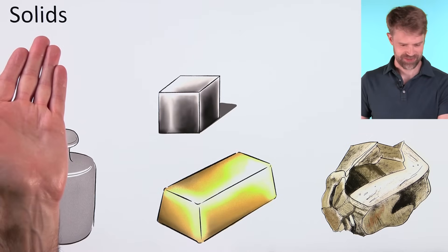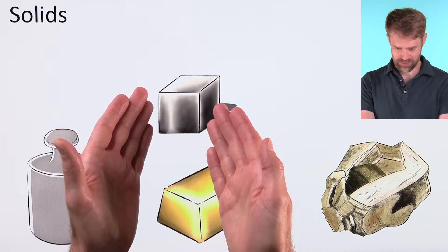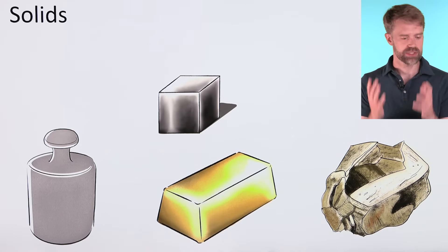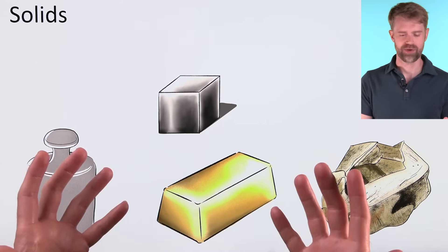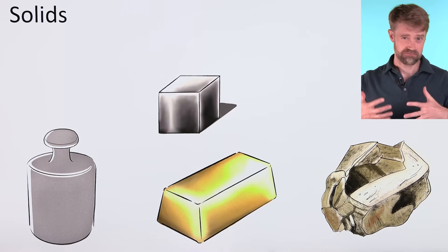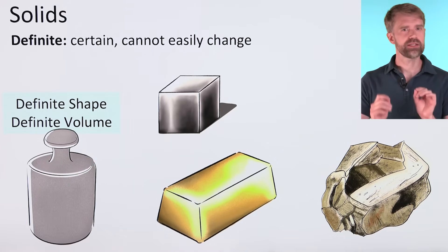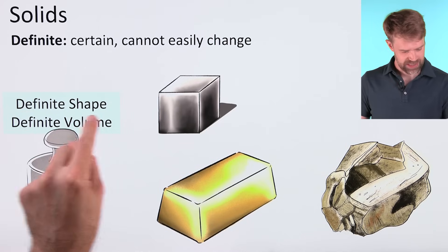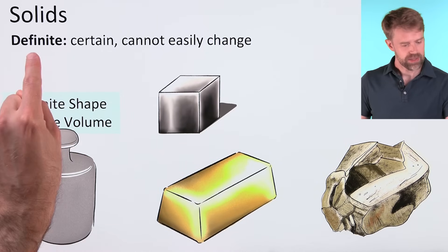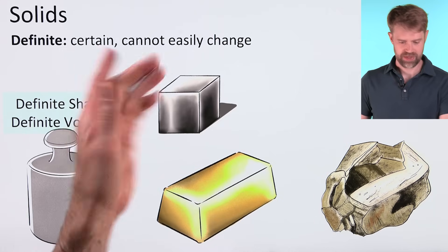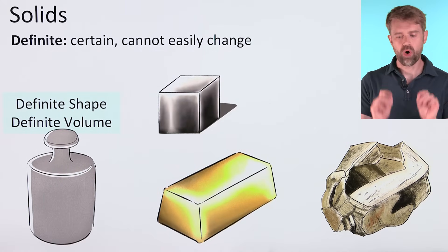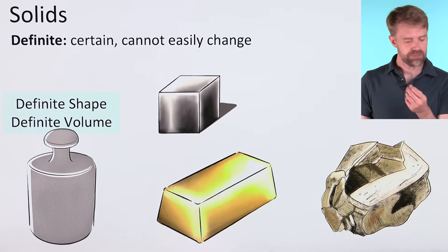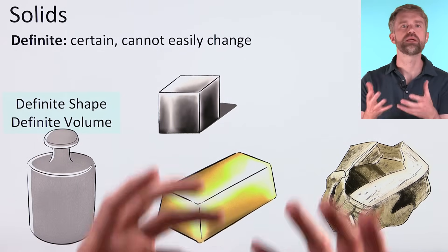We'll start with solids. Here are some examples. A cube of metal, a rock, a bar of gold. We all sort of know what a solid is, but how would you really define it? A solid is hard? A solid is solid? Well, technically speaking, we'd say that what makes a solid unique is that it has a definite shape and a definite volume. Definite means that it's certain, that it can't easily change.